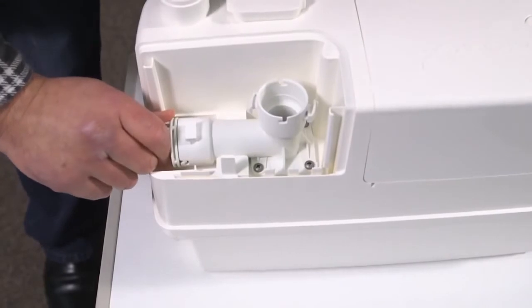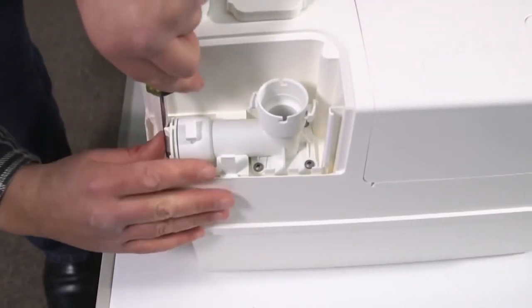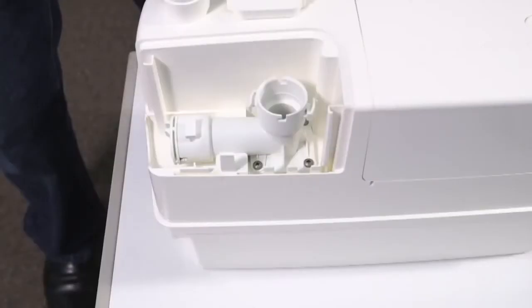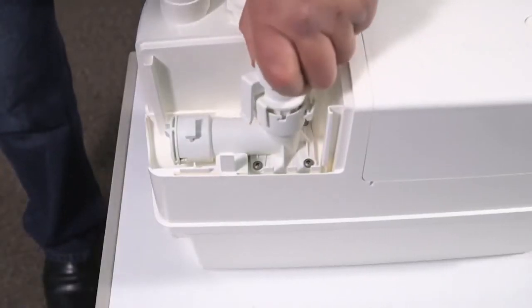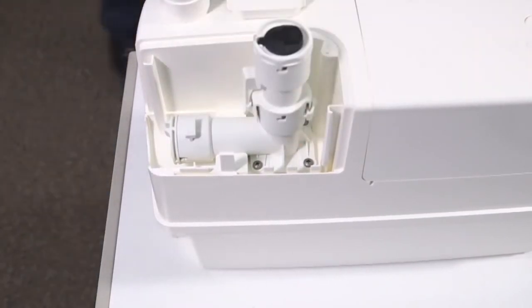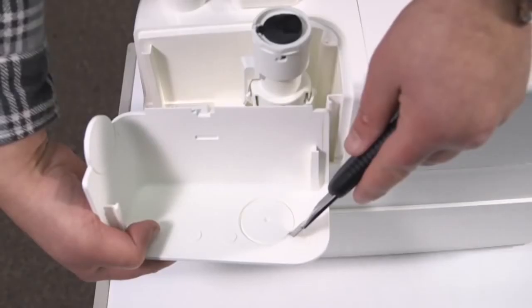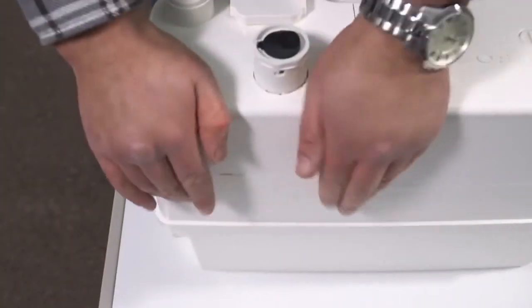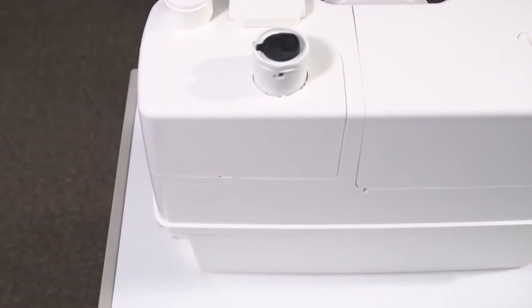Again, use a little soapy water if it's hard to push the cap in. Click in the outlet connector. Check to make sure the non-return valve is working. Again, use soapy water if needed. Cut out the appropriate blank on the plastic cover using a sharp knife, do not use a hammer, and replace the cover.